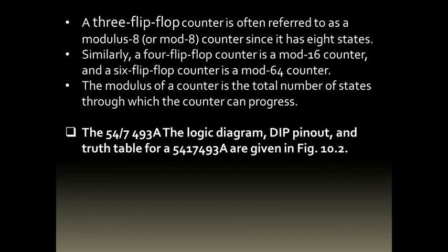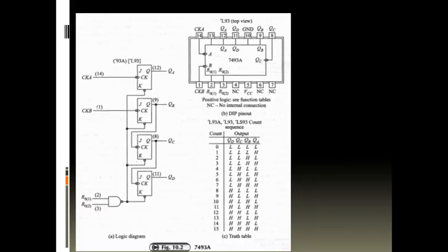Now we are going to study the IC 7493A. This IC is a TTL IC with a DIP pinout. The logic diagram and truth table are given in the next figure. You can see it is a 14-pin IC with pins laid out in a dual in-line package. There are 4 JK flip-flops in this IC — out of these, 3 flip-flops (B, C, and D) are interconnected as a 3-bit ripple counter as studied previously, with clock input at clock B on pin number 1.